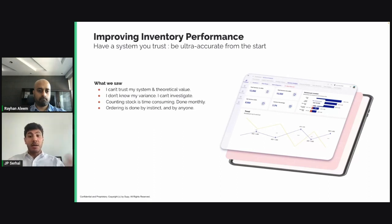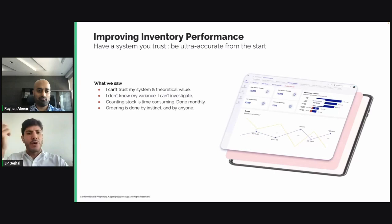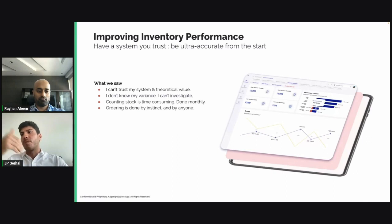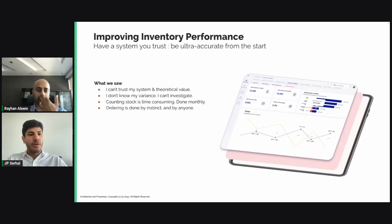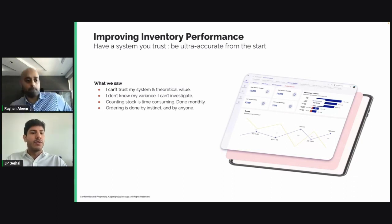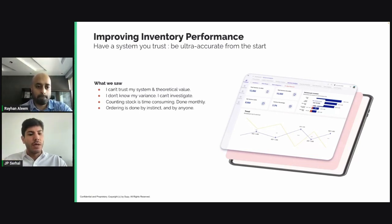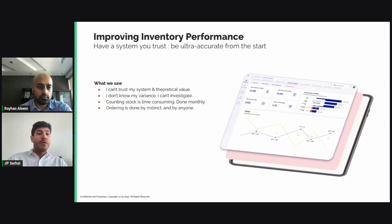Ordering is done by instinct and by almost anyone. A sous chef might say, 'I need ketchup — I don't know how much I have, but I think we're going to have a big event so I'll order 16 bottles.' And it turns out the event is canceled and you have to waste all of that. These are the issues found within businesses, and this is why inventory is not performing.